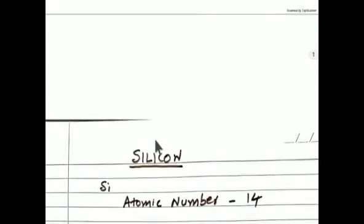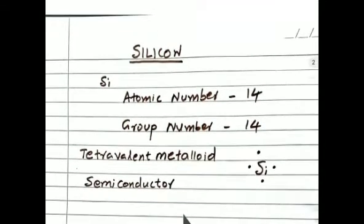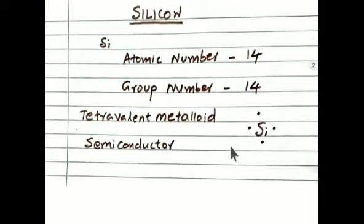First one, silicon. Silicon is an element. Its symbol is Si. Its atomic number is 14. Its group number is 14. Silicon is tetravalent metalloid. Tetravalent means it has 4 valence electrons.